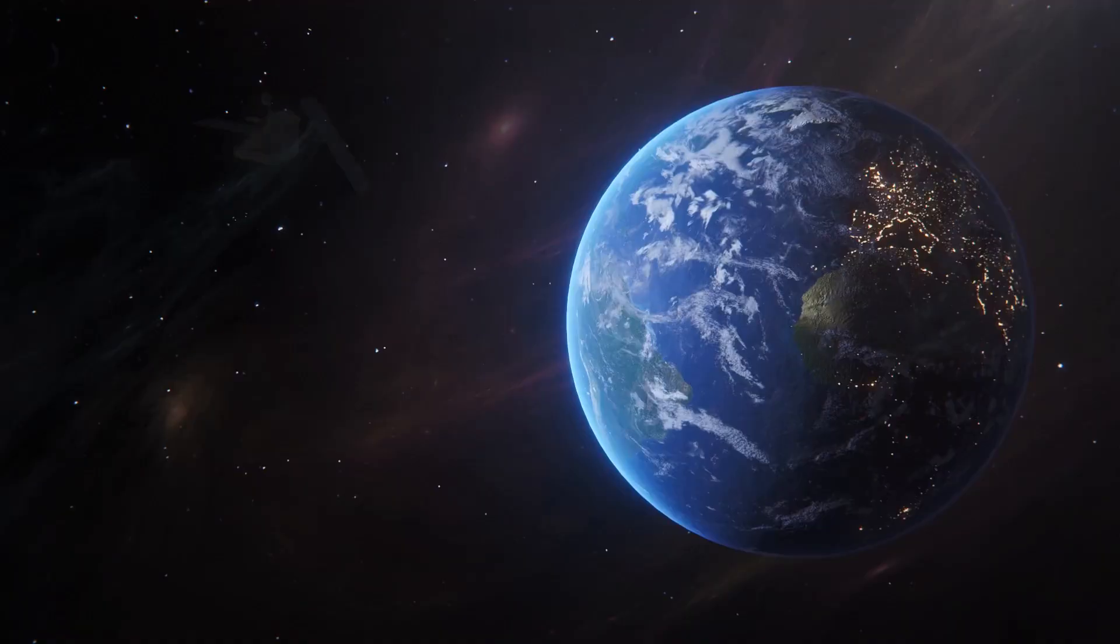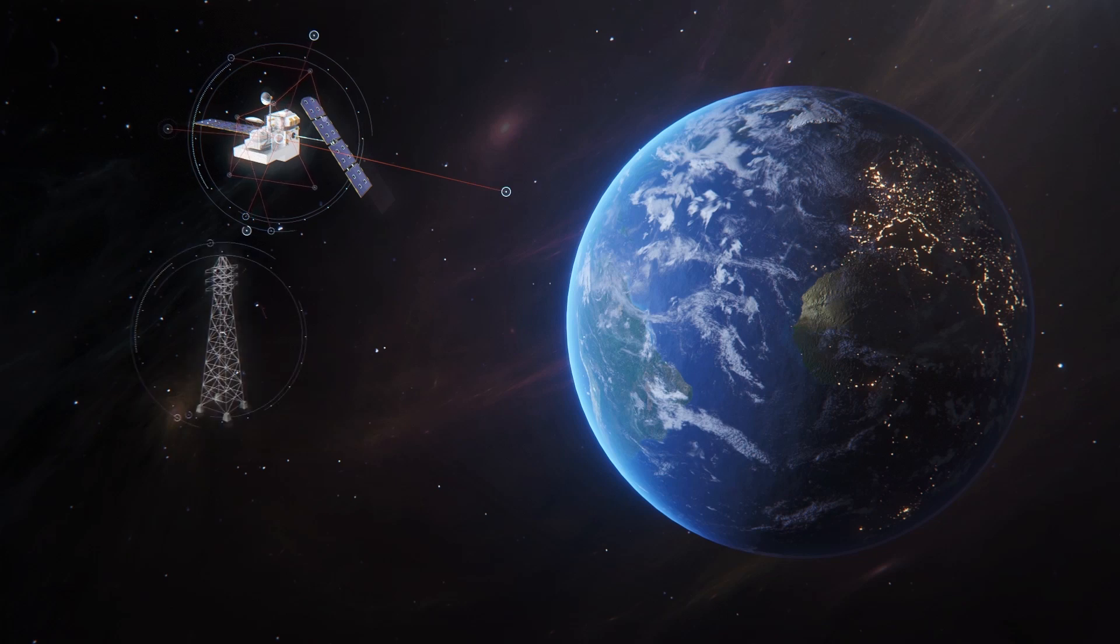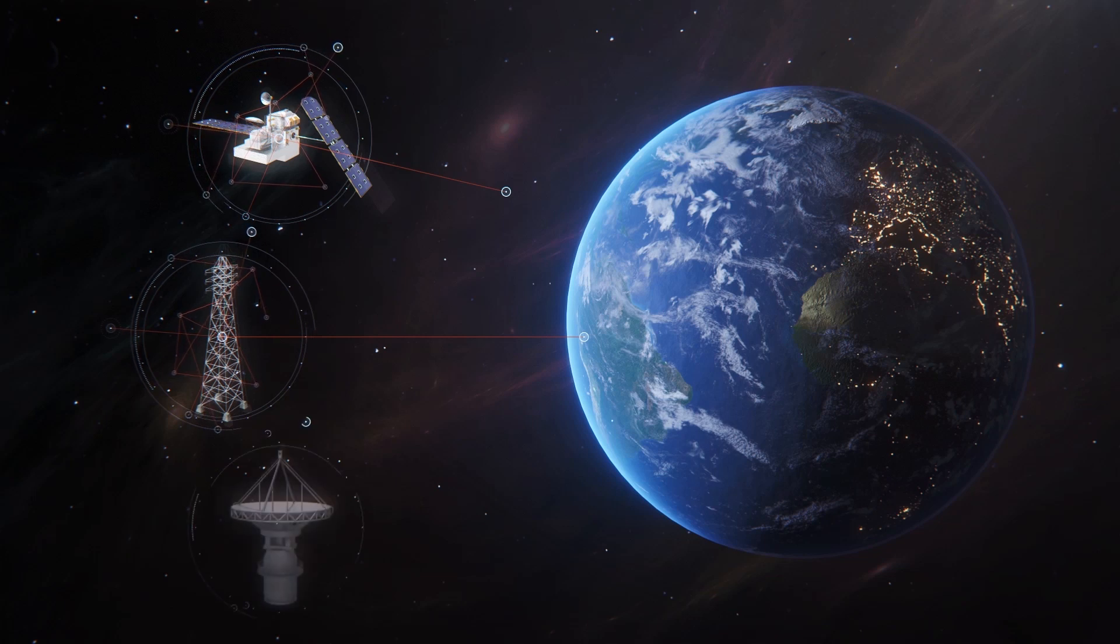A more violent X-class flare directed toward Earth could cause fluctuations in power grids as well as high-frequency radio blackouts and navigational issues over the sunlit part of Earth.